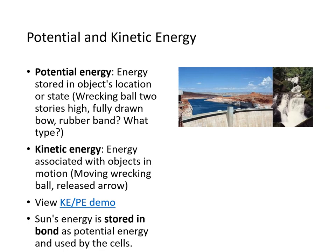There are two types of energy: potential and kinetic. Potential energy is energy stored in an object's location or state — think of a wrecking ball raised two stories high, a fully drawn bow, or a stretched rubber band. Kinetic energy is energy associated with motion — think of a wrecking ball being released and about to hit a building, or an arrow being released.